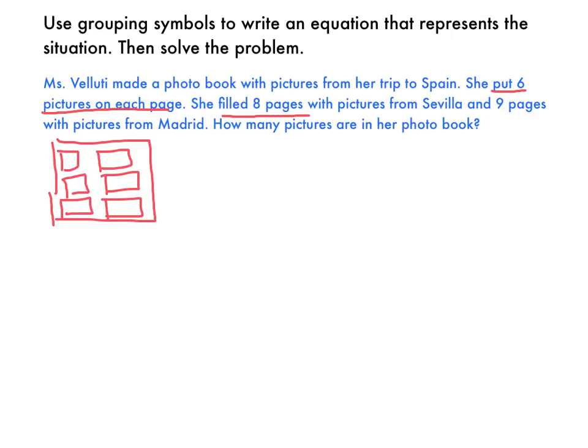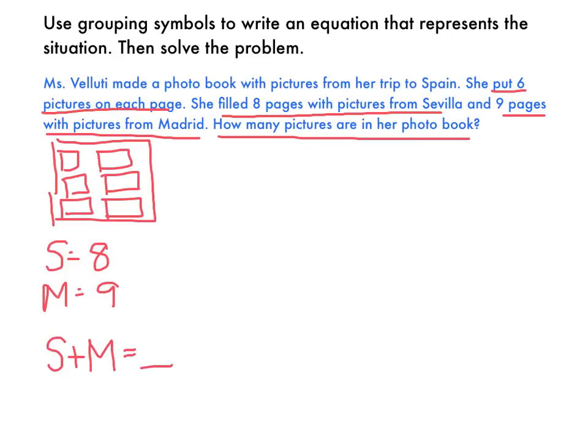She filled 8 pages with pictures from Sevilla, 9 pages with pictures from Madrid. So we know Sevilla equals 8 pages, and Madrid equals 9 pages. So now I need to write an equation that shows how many pictures are in her photo book. So that would be like Sevilla plus Madrid equals blank.